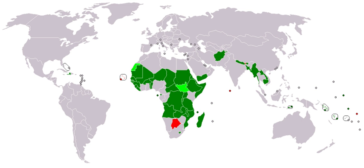There is no established convention for the designation of 'developed' and 'developing' countries in the United Nations system. In common practice, Japan in Asia, Canada and the United States in Northern America, Australia and New Zealand in Oceania, and Europe are considered 'developed' regions. In international trade statistics, the Southern African Customs Union is also treated as a developed region and Israel as a developed country, while countries emerging from the former Yugoslavia are treated as developing countries.